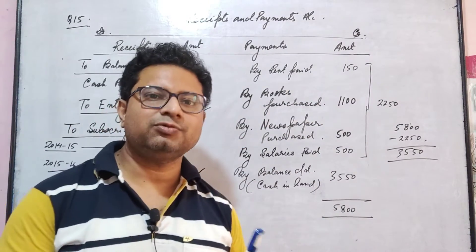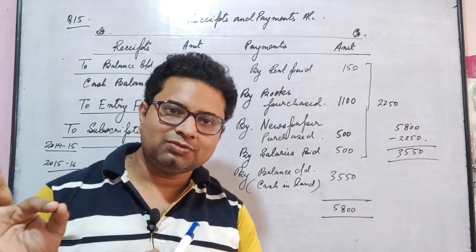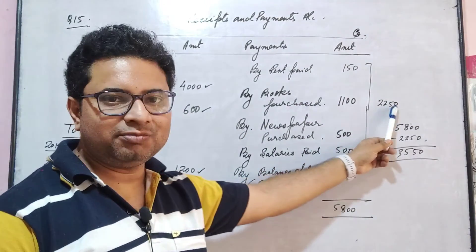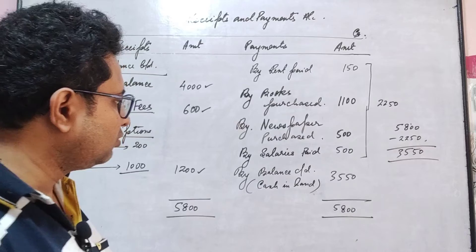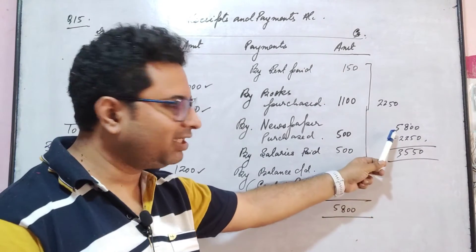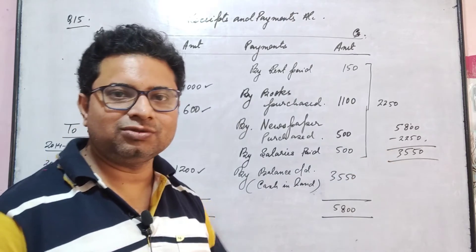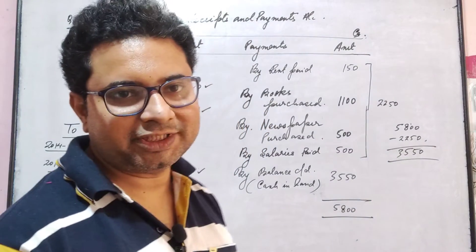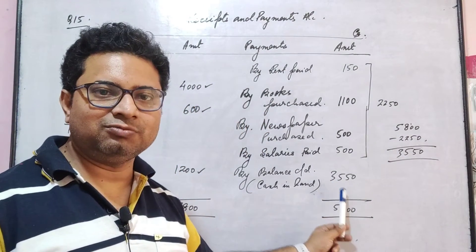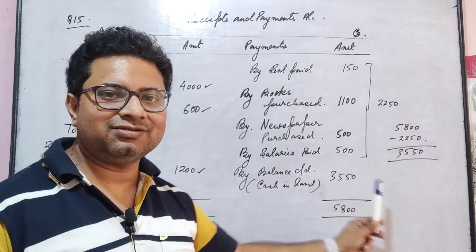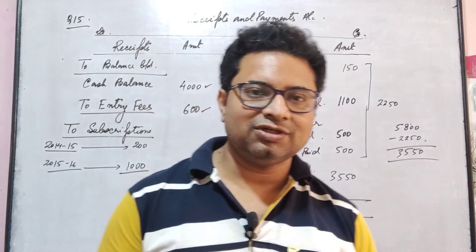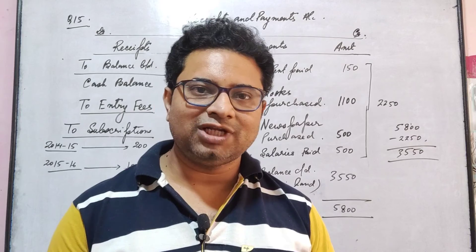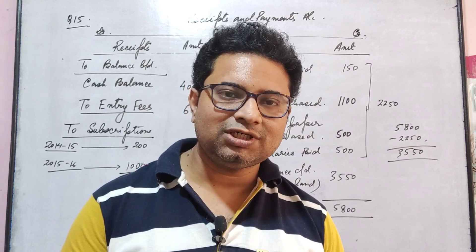When you make the payment side total, it will be Rs. 2,250. The receipt side total is bigger, so: 5,800 minus 2,250 gives a closing balance of Rs. 3,550. I think you have understood the question very well. We have other questions from time to time — please don't forget to like, share and subscribe to my YouTube channel. Thank you.